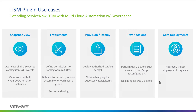For provisioning and deployment, with entitlements you can apply governance and deploy only authorized catalog items, while having the capability as a user to view the activity for those requested catalog items — for example, whether a request is pending for approval, already approved, or completed.